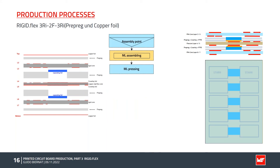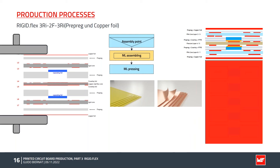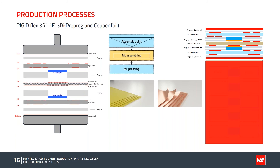Finally, copper foils and prepreg are needed on the top and bottom side of the PCB. Now the production panel is ready for pressing. This pressing process takes place under vacuum, high pressure, and temperatures up to 200 degrees.